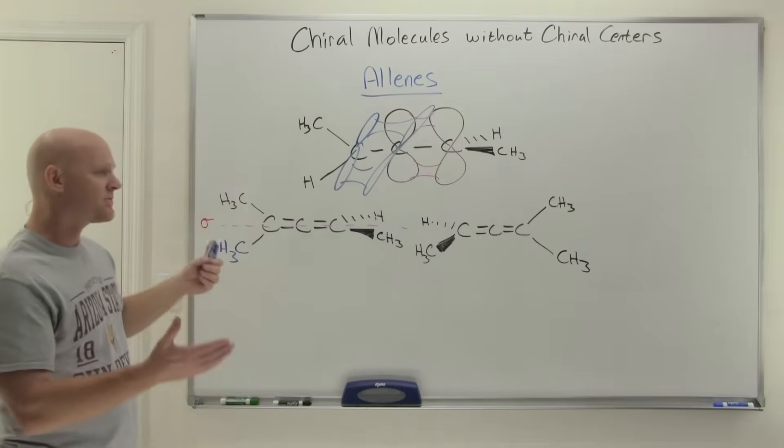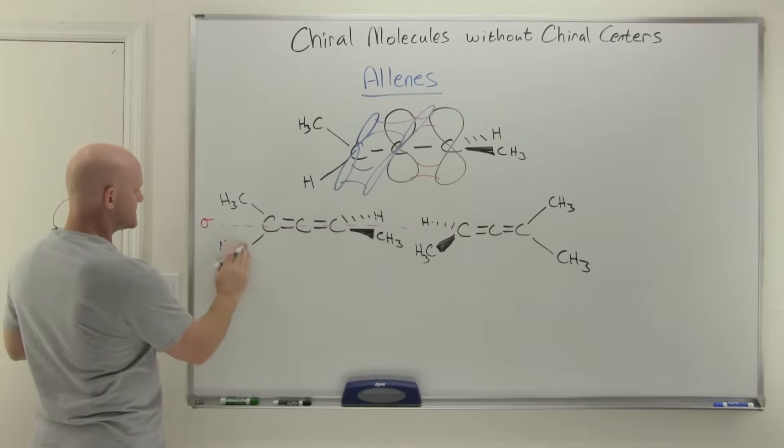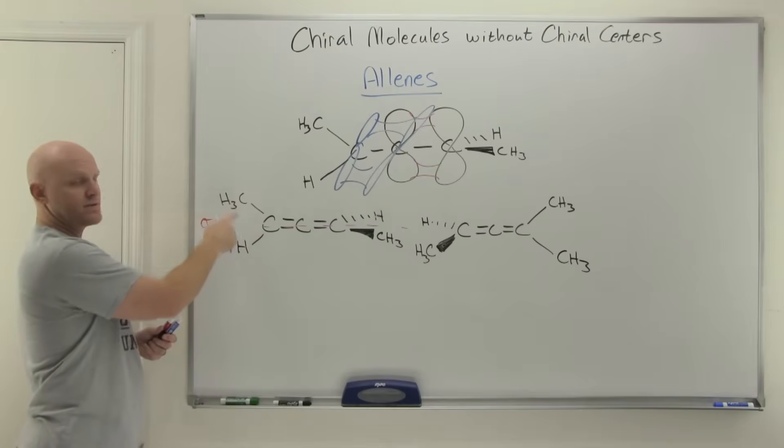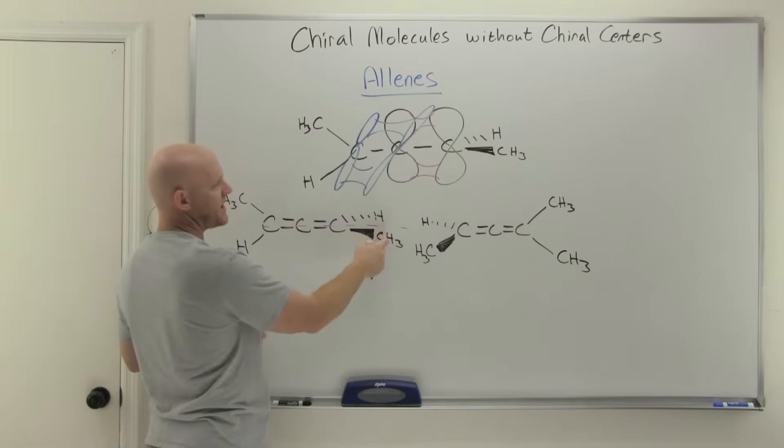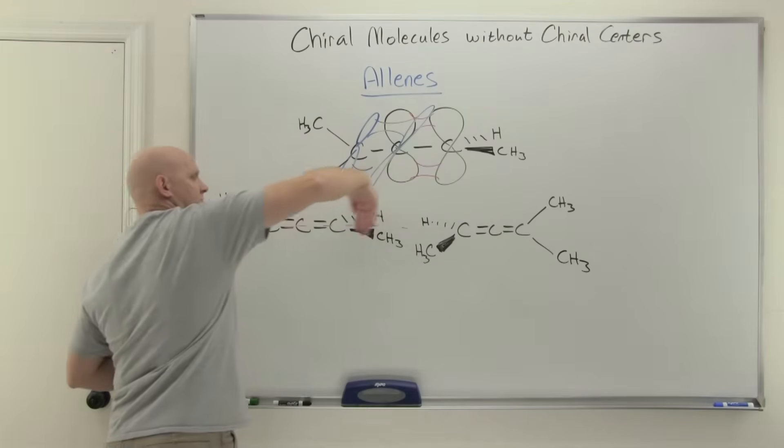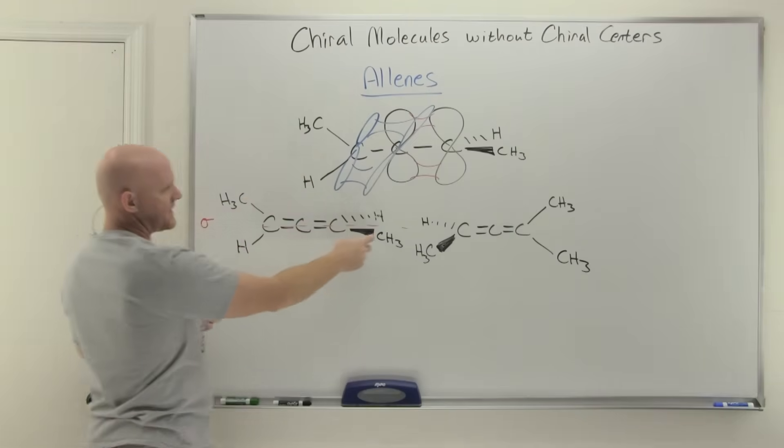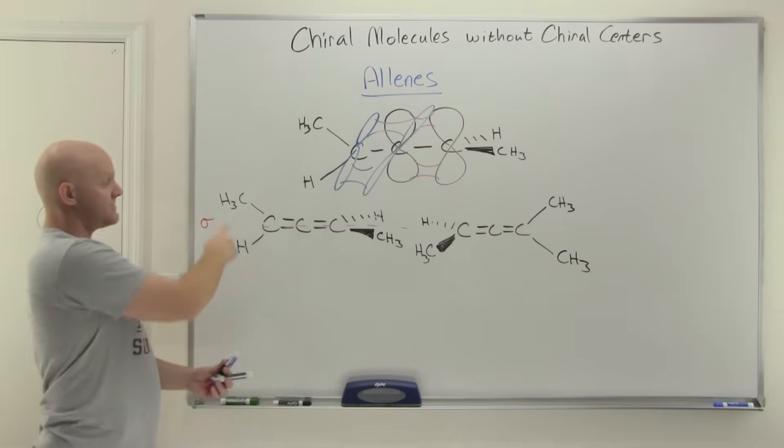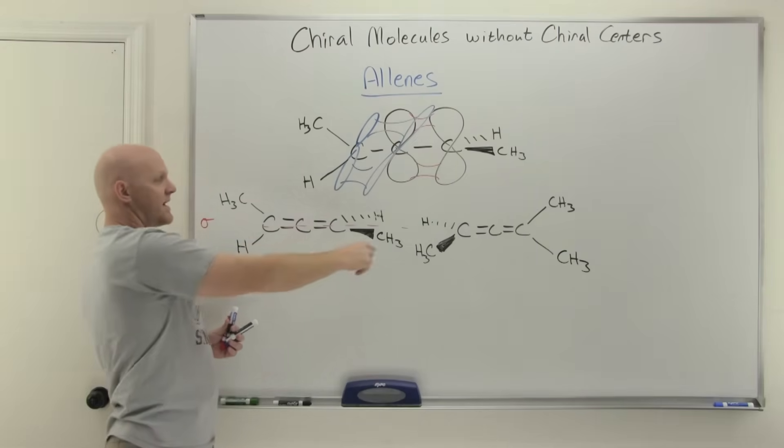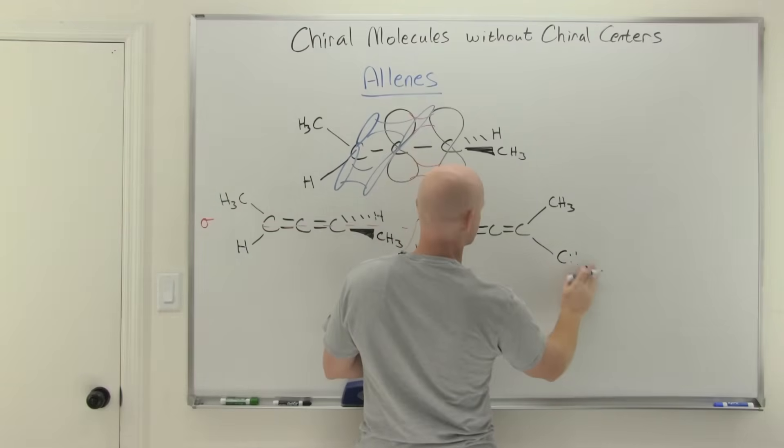And so the idea then is for you to have an allene that ends up being chiral, your requirement is that the two groups on one side of the system have to be different from each other. And the two groups on the other side have to be different. Otherwise, there's going to be an internal mirror plane. If I make both of these methyls or both of these hydrogens, you'd have an internal mirror plane running right through the board instead. And so as long as these two are different from each other, and these two are different from each other, even if these two are the same as these two, but different on the same side here, that's going to be chiral. And it will be different than its mirror image, like we see here.